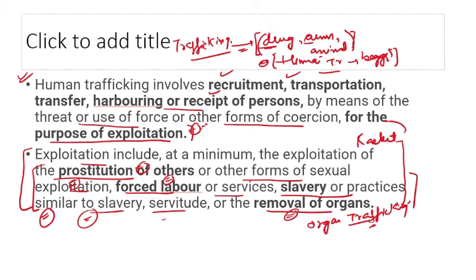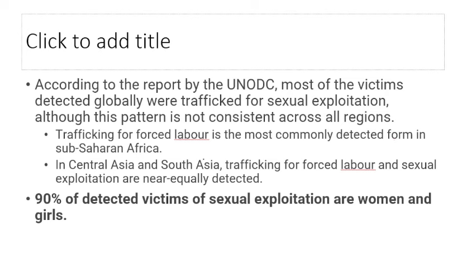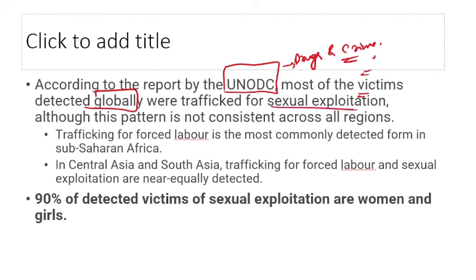Human trafficking has a very large global racket. To tackle it, according to the report by UNODC — United Nations Office on Drugs and Crime — most of the victims globally were trafficked for sexual exploitation, though this pattern is not the same in all regions. Overall, sexual exploitation is the main reason for human trafficking.